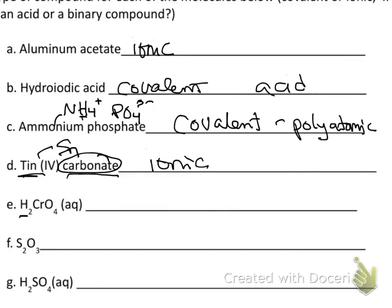This one has H at the front and is marked aqueous. The combination of hydrogen at the front plus aqueous means it's an acid. If it's an acid it has to be covalent — there are no ionic acids.